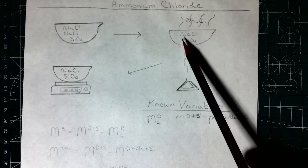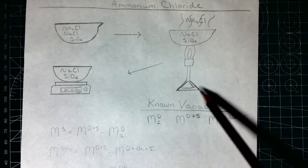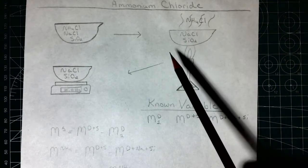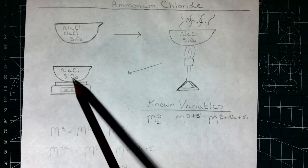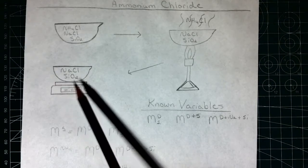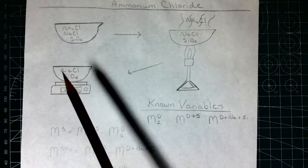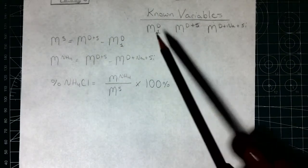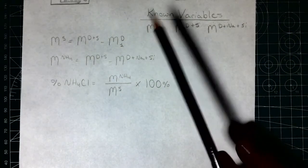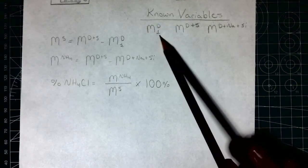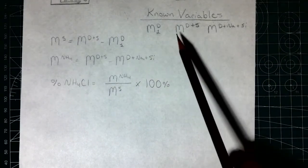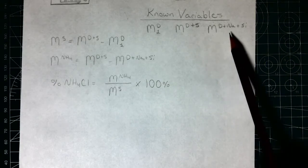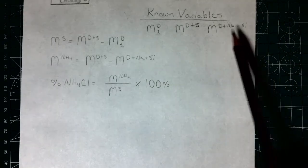We're not going to collect it back at all, though there are more sophisticated setups where we could recoup the ammonium chloride if we wanted. Then we're going to weigh this dish and the remaining sodium chloride and silicon oxide. So our known variables are: the mass of dish one, the mass of the dish and the sample, and then the mass of the dish with the sodium chloride and the silicon oxide at the end.